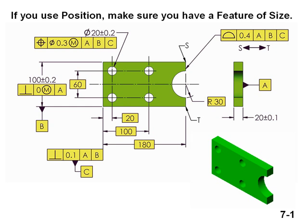Ask which features on this part are features of size. Explain why datum feature B does not need a position tolerance, since it is establishing an origin. Remind them that the radius may or may not have opposed points, and therefore is not a very good feature of size.